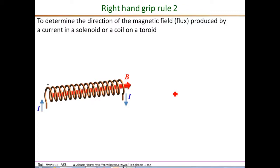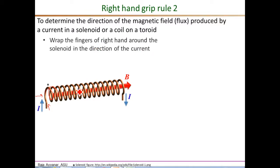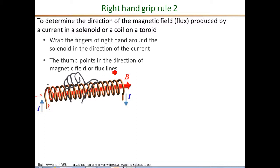Next, let's review the right hand rules for determining the direction of the magnetic field in a solenoid or a toroid. Here is a solenoid with a current entering as shown, and the current viewed from this side flows in the clockwise direction and eventually leaves the solenoid as shown. To determine the direction of the B field, we wrap the fingers of the right hand around the solenoid in the direction of the current. The fingers point in the direction of the current and the thumb points in the direction of the B field in the solenoid — in this case, the left to right direction.